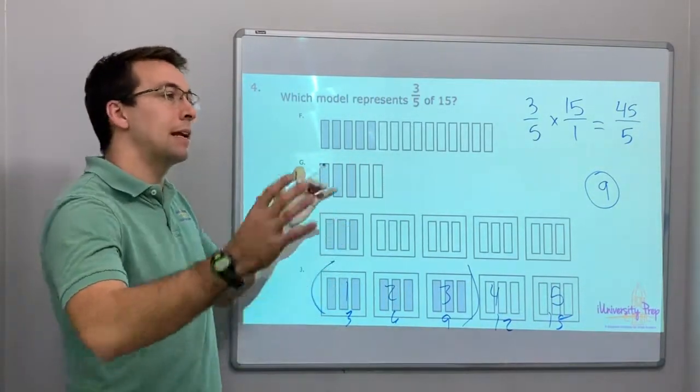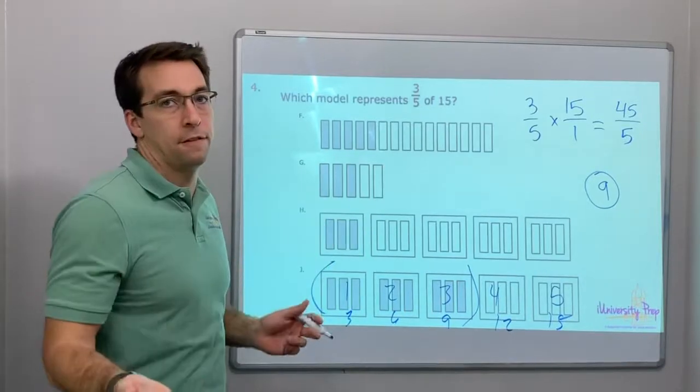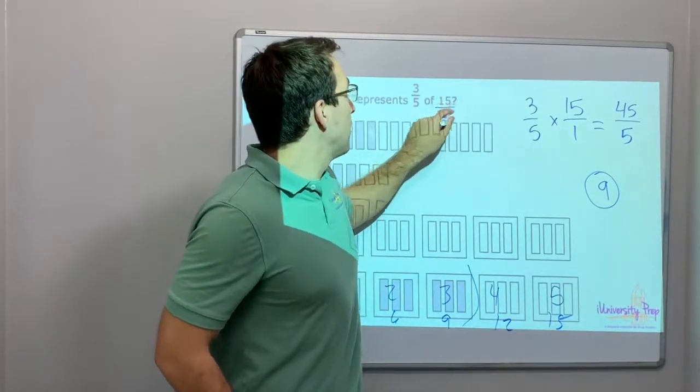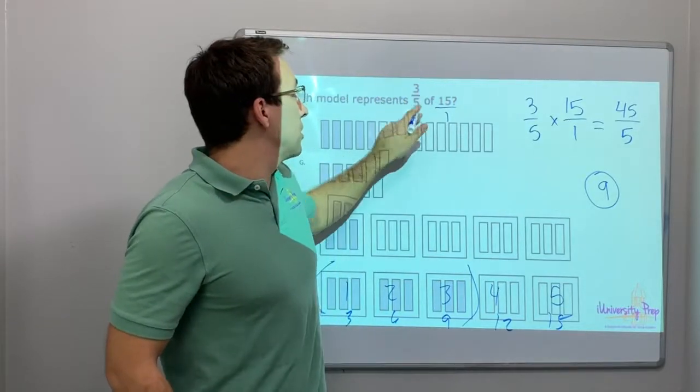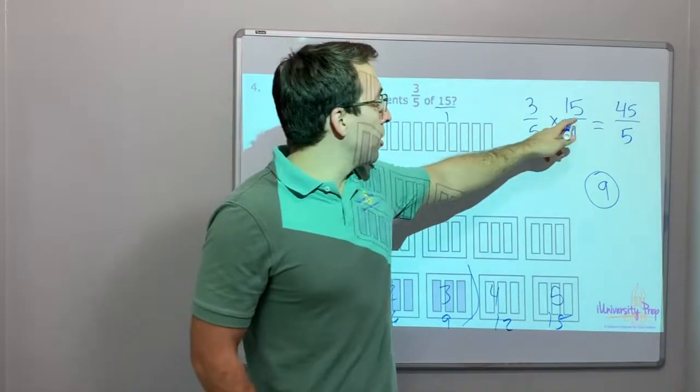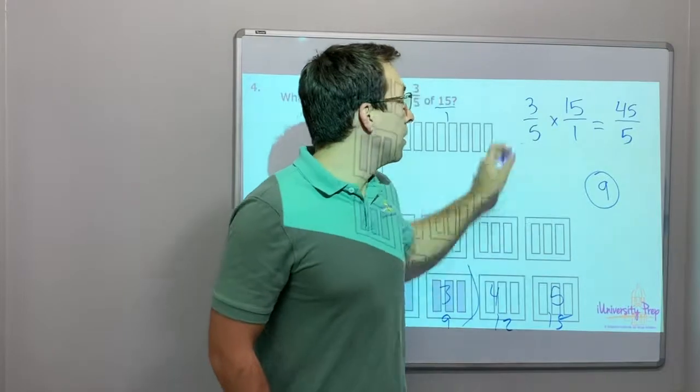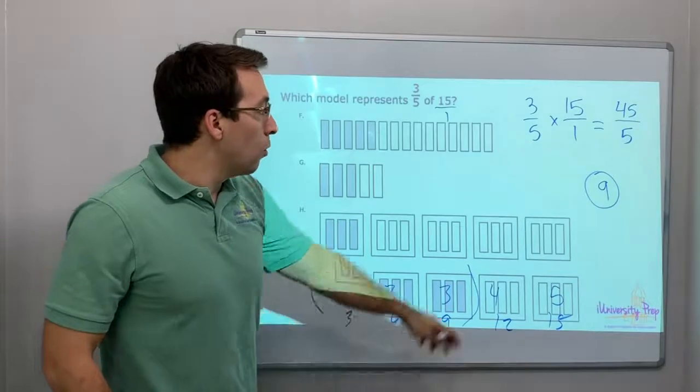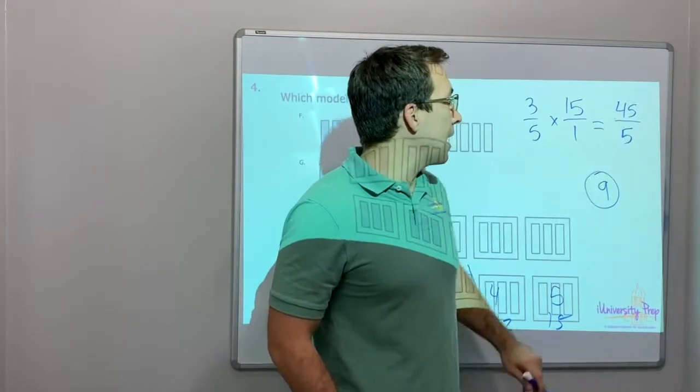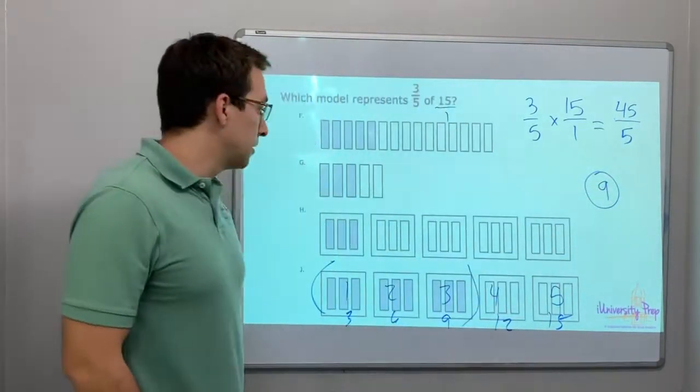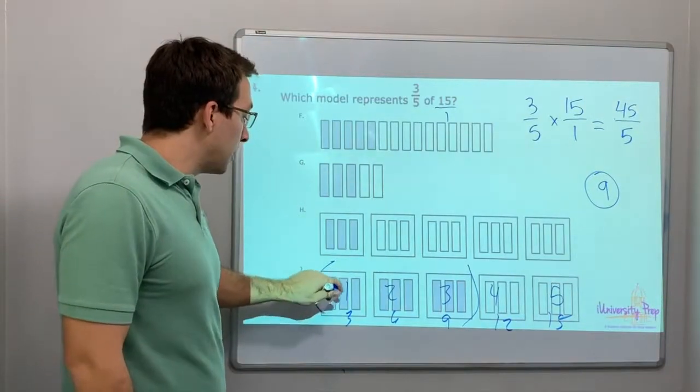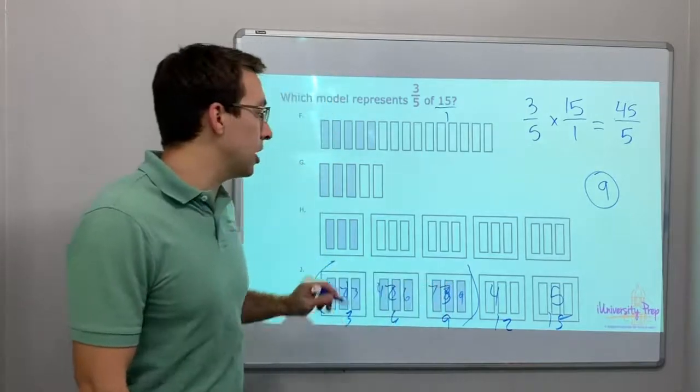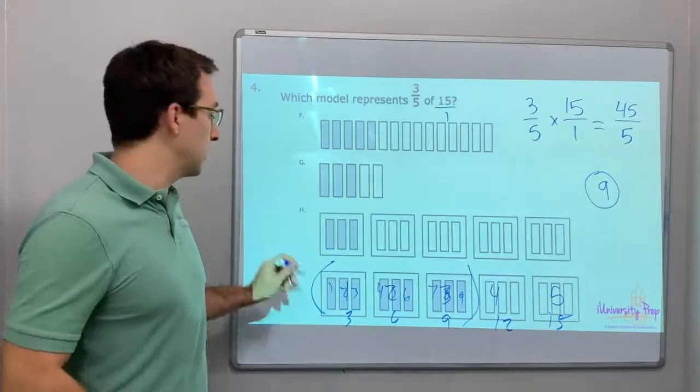So, if we have fifteen and we want to make it three-fifths of fifteen, this is a multiplication problem. See what I did? You can multiply a fraction times a whole number by just turning the whole number into a fraction. Put it over one. Three times fifteen is forty-five. Five times one is five. What is forty-five divided by five? It's nine. One, two, three, four, five, six, seven, eight, nine shaded out of fifteen. That's our answer.